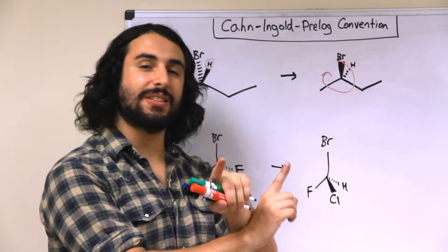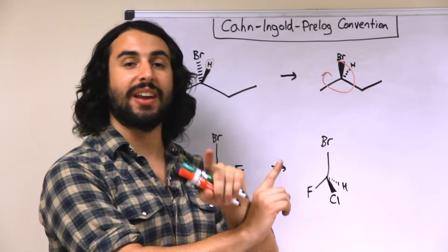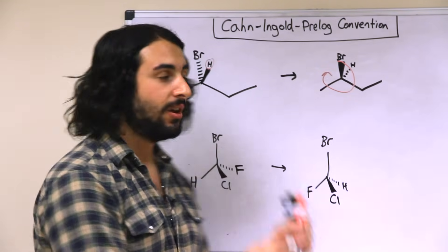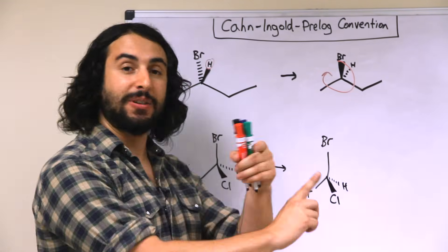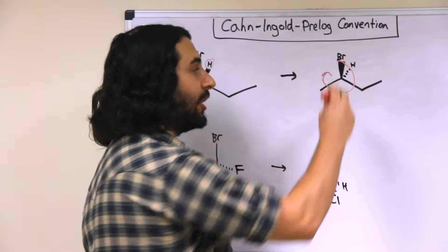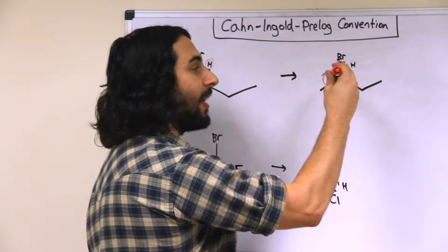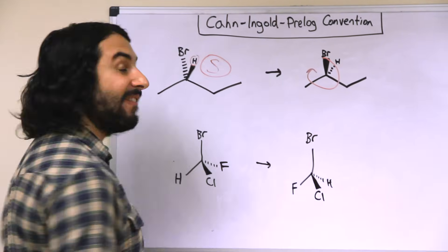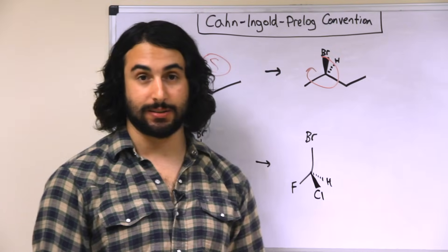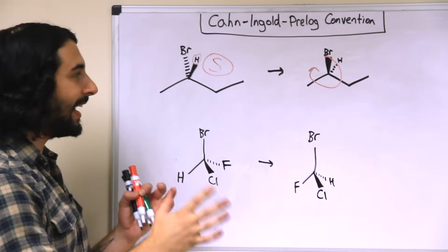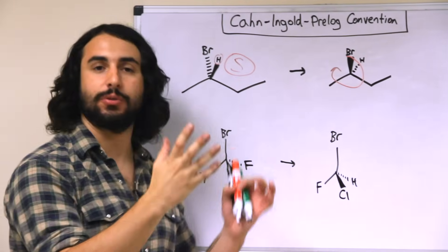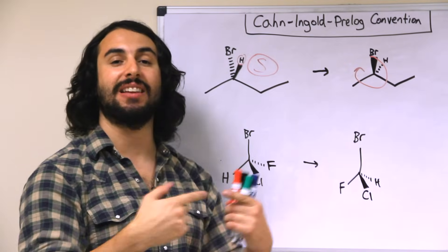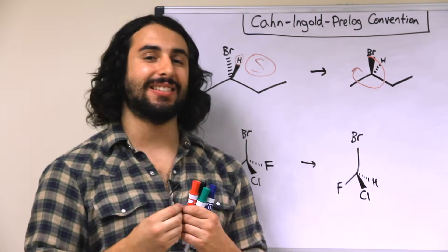The thing is, we have inverted the chiral center to the opposite configuration. So if we do this cheating method, what we're going to have to do is invert the answer we get. We swapped them; the swapped molecule looks like R — therefore the original must have been S.